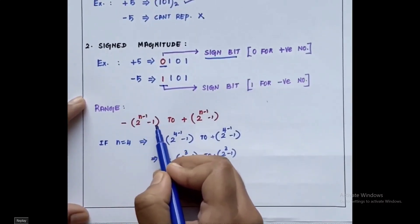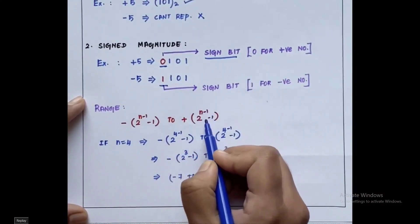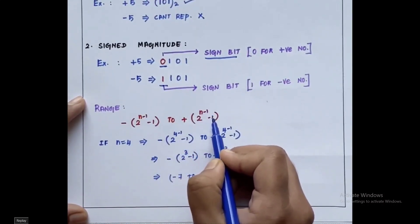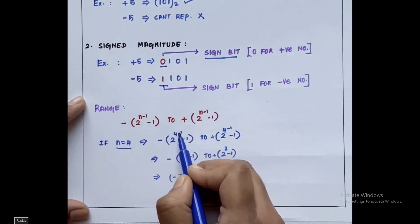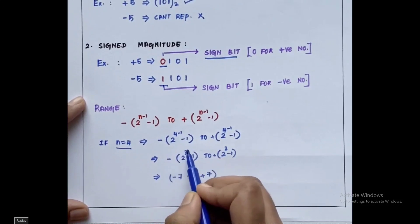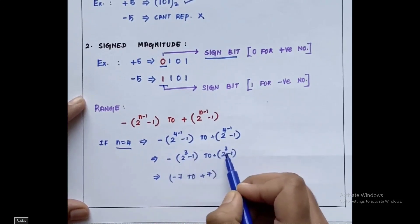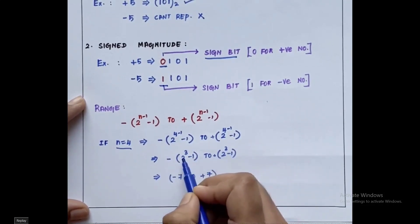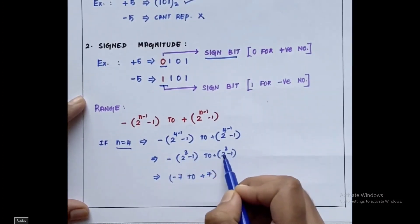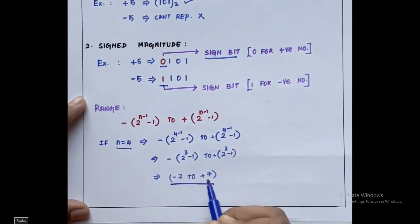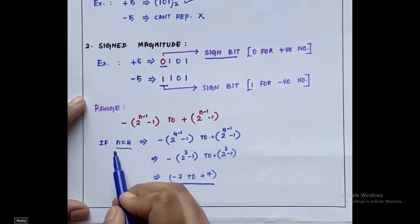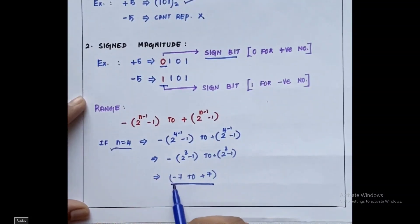The range of signed magnitude is from minus 2^(n−1) − 1 to 2^(n−1) − 1. If n equals 4, substituting we get minus 2^3 − 1 to 2^3 − 1, which is minus 7 to plus 7. So the range of signed magnitude representation is from minus 7 to plus 7 when n equals 4.